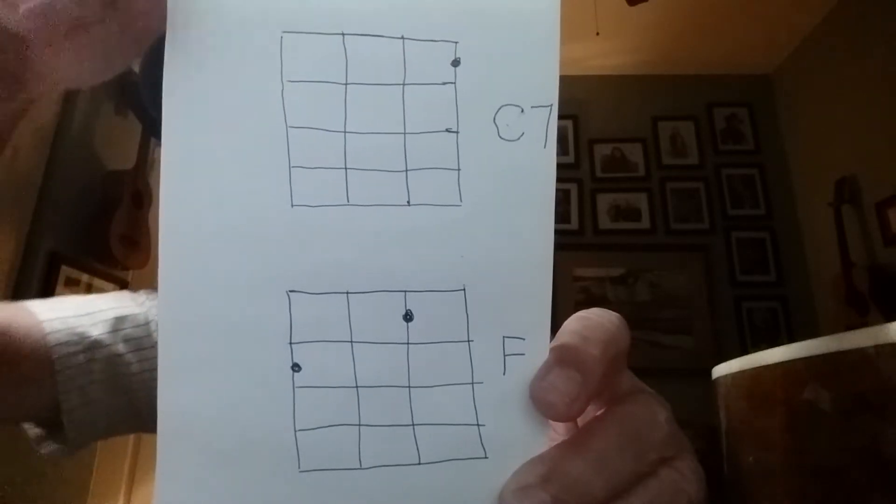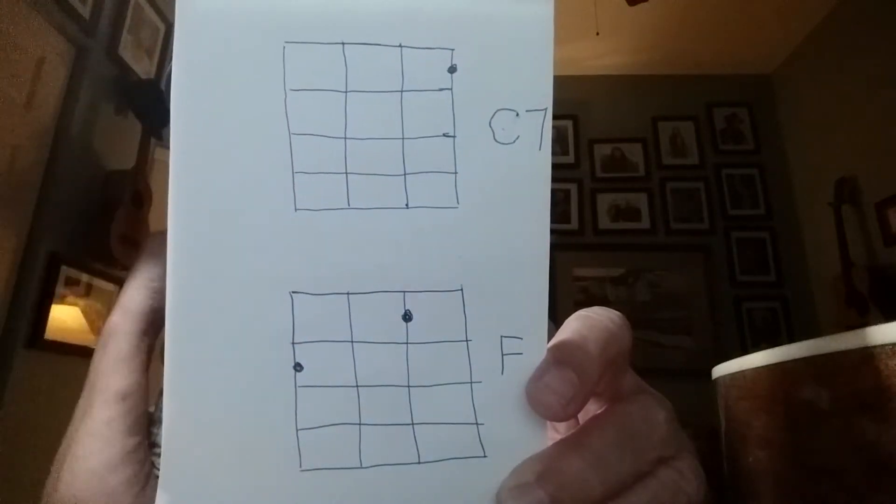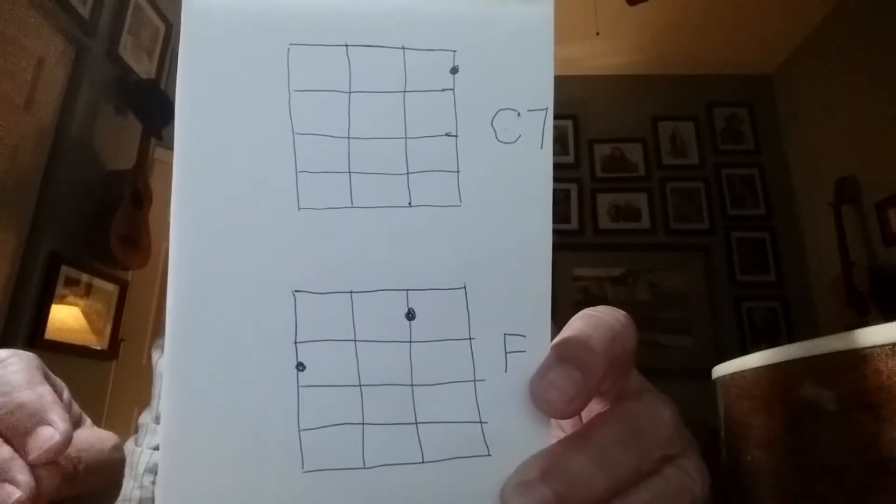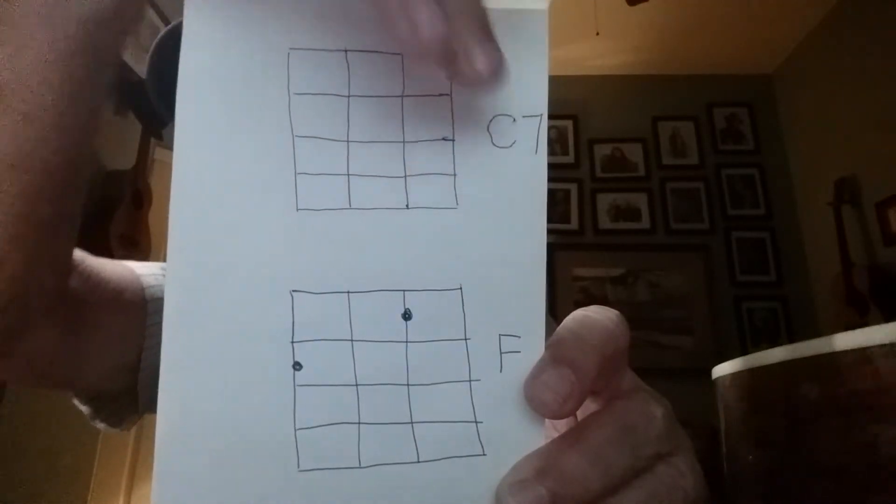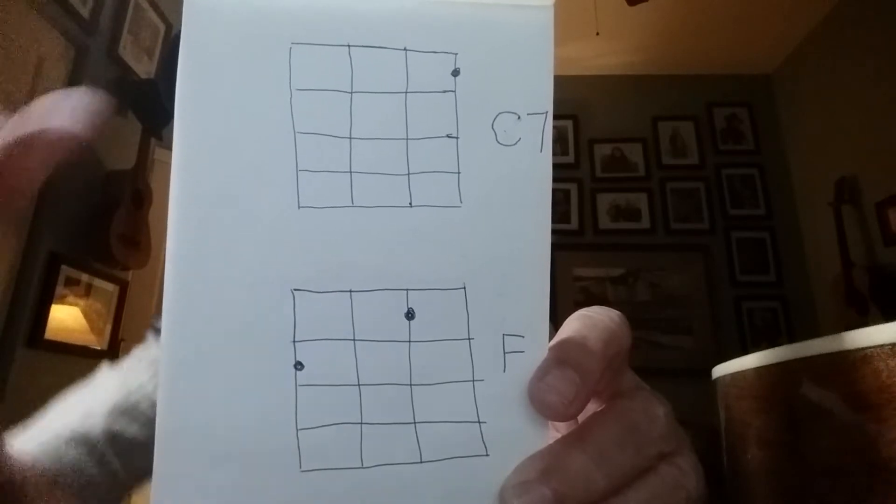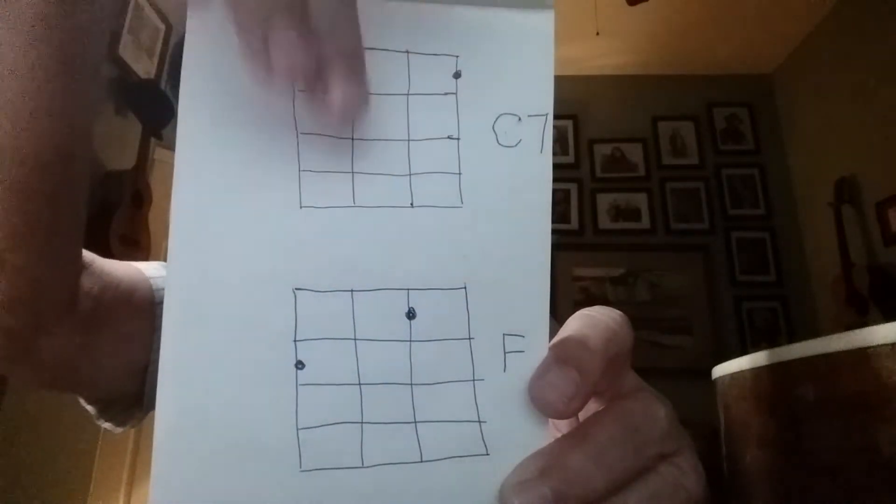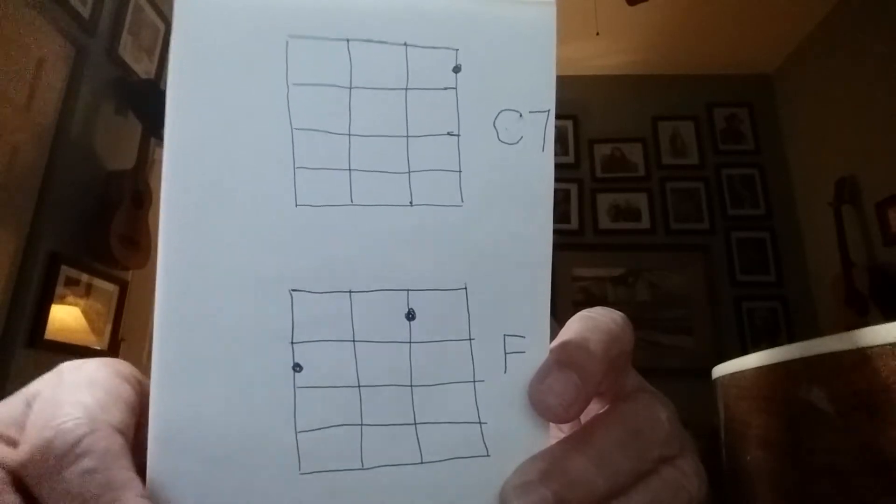Which means that this end of the box is close to the tuning things, and this end of the box is on its way to the body of the instrument. Then the lines that go across, these lines, those are the frets—the metal frets that we talked about last week. And then the up and down lines are actually the strings.